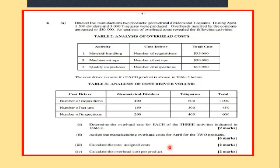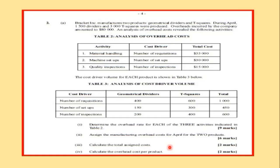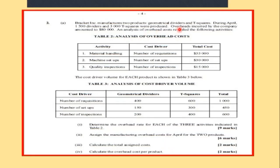Let's take a look at the data. We are given two tables: one is an analysis of the overhead costs, and another is the analysis of the cost driver volume for the number of cost drivers. Bracket Inc. manufactures two products — geometrical dividers and T-squares. During April, 1,500 dividers and 3,000 T-squares were produced. Overhead incurred by the company amounts to $80,000. An analysis of overhead costs reveals three activities: material handling, setups for machines, and quality inspection. The cost drivers are requisitions, number of setups, and inspections, and we are given the total costs for each of these activities.